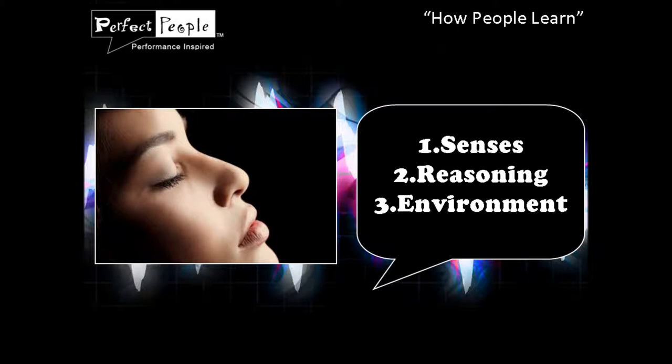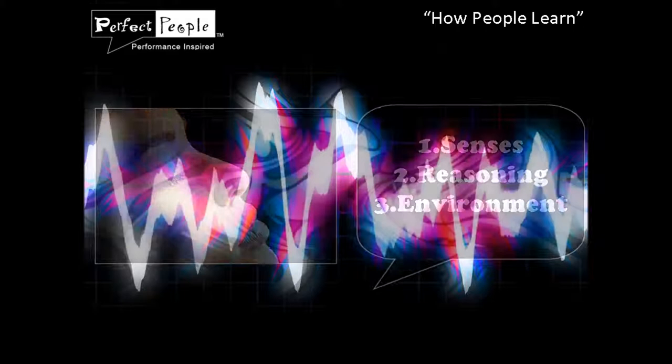Number three is learning environment. This is very important because our environment includes our social interactions with other people and our surroundings. What's very important for you to understand in terms of your learning is you want to make sure that you avoid conflicts between what you want and the influence of your environment.